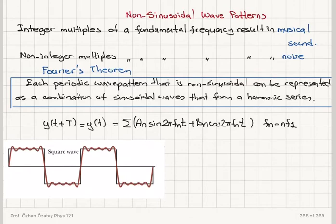An integer multiple of a fundamental frequency. Therefore, the waves form a harmonic series, and a_n and b_n are the Fourier amplitudes.